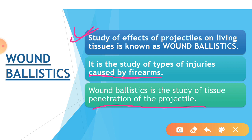Overall, what wound ballistics means is: any projectile fired from a firearm, when it penetrates or hits a living body or living tissue, what effects it shows and what kinds of injuries it causes — that entire study is called wound ballistics. Forensic ballistics is divided into four parts: external ballistics, internal ballistics, terminal ballistics, and wound ballistics.